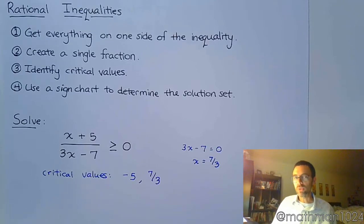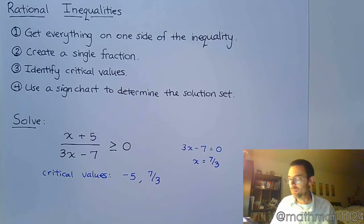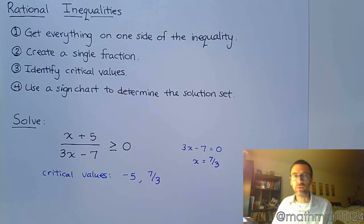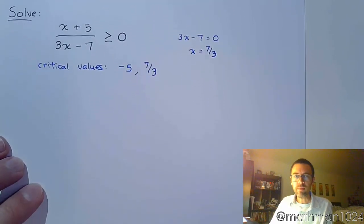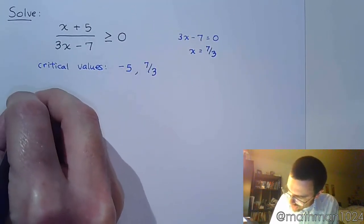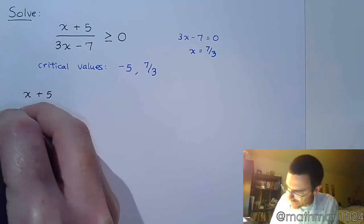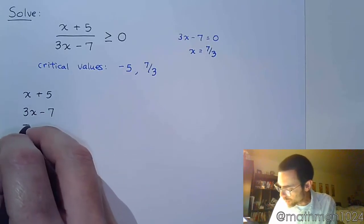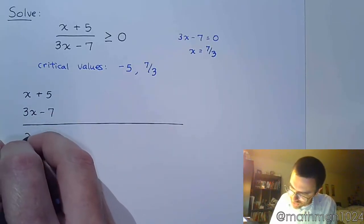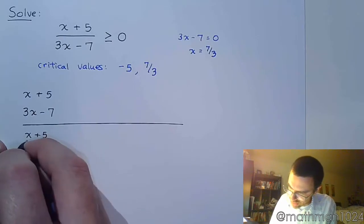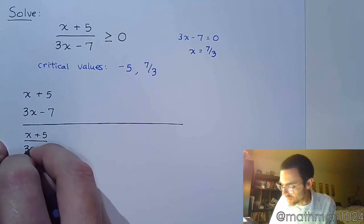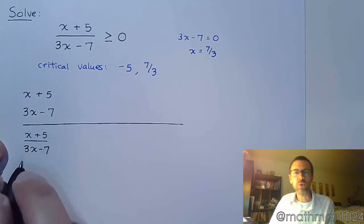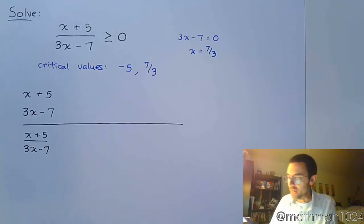In terms of what a graph would look like for something rational, that's something we save for a couple of chapters from now. We're going to use a sign chart to figure out what this looks like. When we do the sign chart, we look at each individual factor, see what their signs do, and then bring it all back together into a single expression. We just have to pay attention to the signs — we don't ever have to worry about how big or small the number is. It's all about whether it's positive or negative.